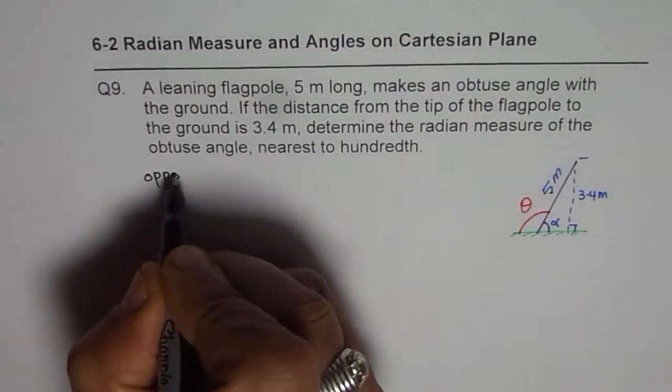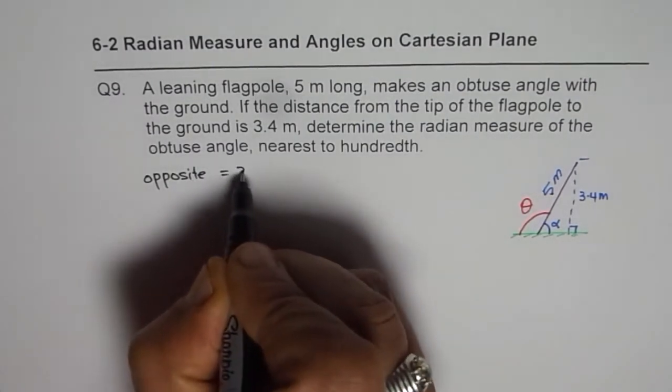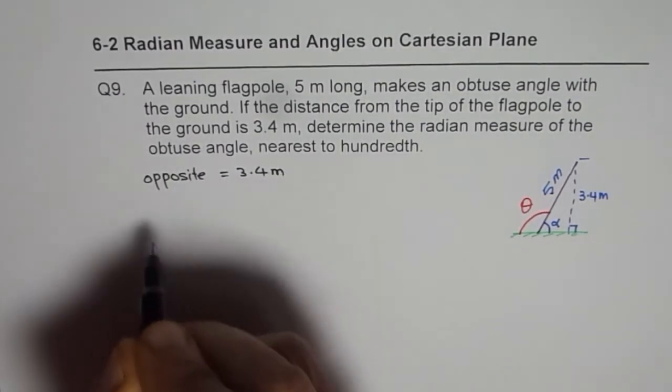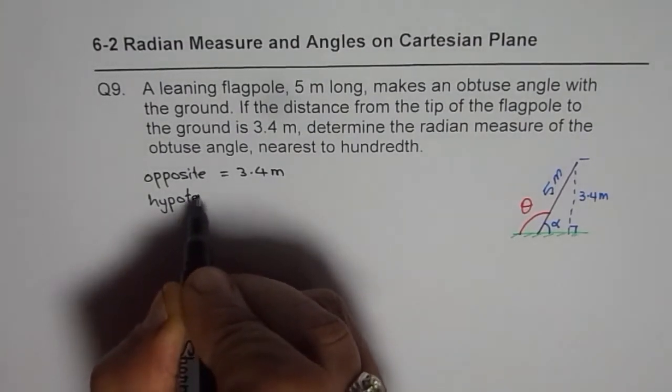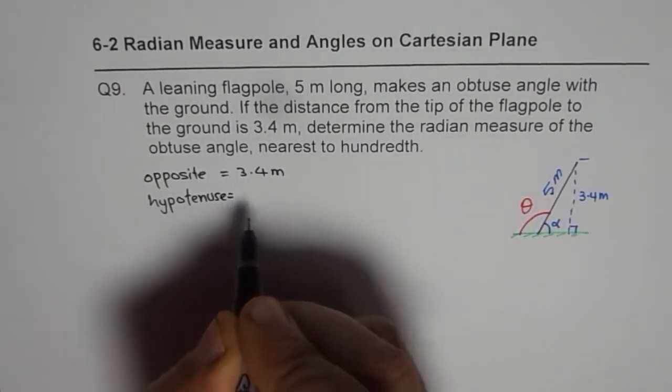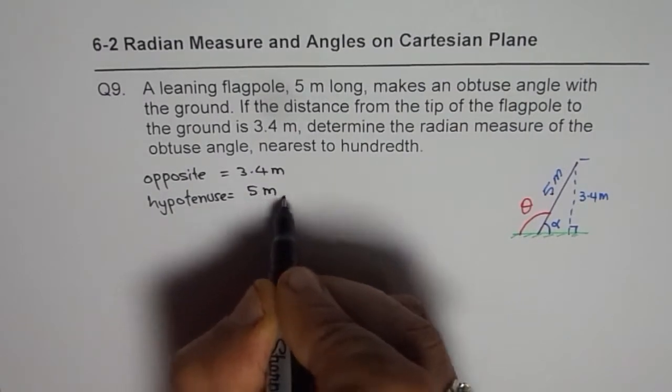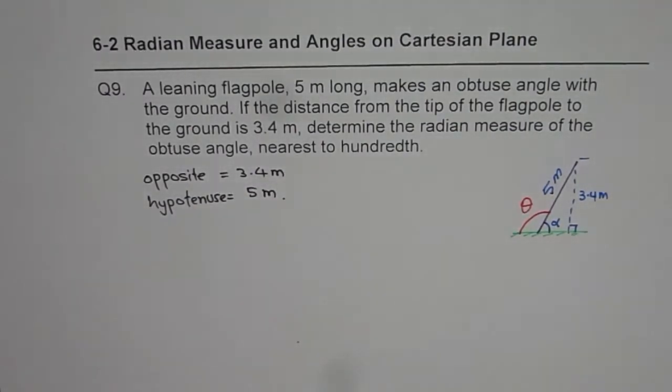So we are given opposite side which is 3.4 meters and we are given hypotenuse which is 5 meters. Now which trigonometric ratio should we use for this condition?